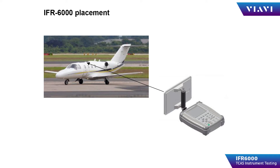The TCAS antenna should be in clear view of the operator's IFR 6000 flat plate antenna. Be aware of any hangar walls, toolboxes, or other aircraft near the aircraft you are testing, as these can cause reflections and multi-path interference while testing.